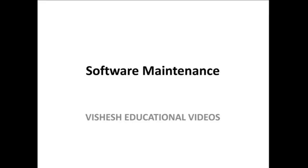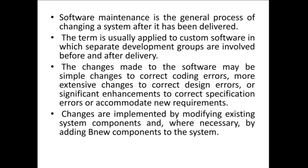Welcome to Vishesh educational videos. In this video I'm explaining about software maintenance. Software maintenance means once the software got delivered to the customer, what are the things you should take care of? Software maintenance is the general process of changing a system after it has been delivered. Even after delivering the software, sometimes you need to do changes to that system — that is called maintenance.